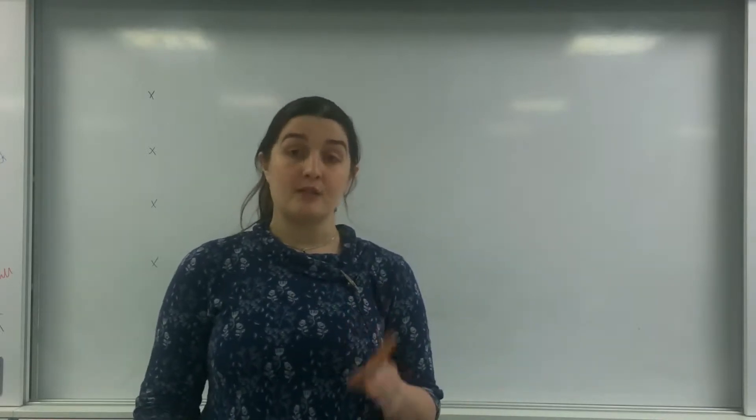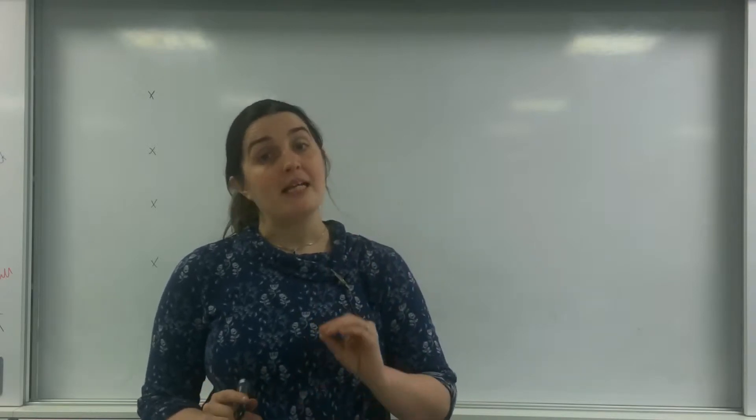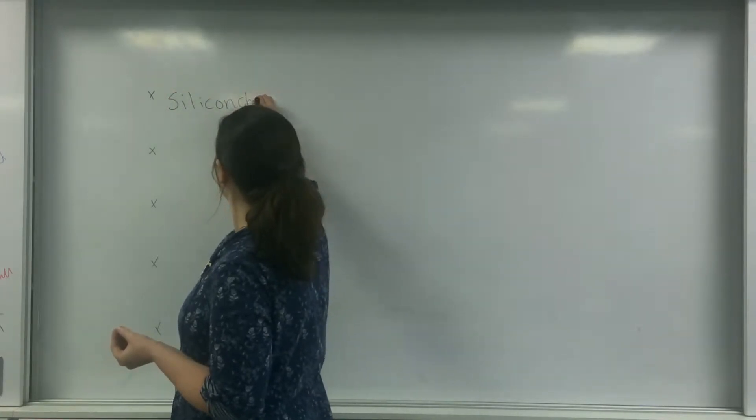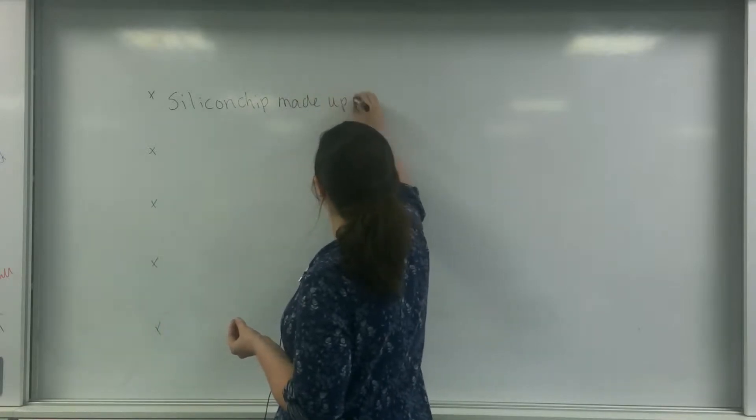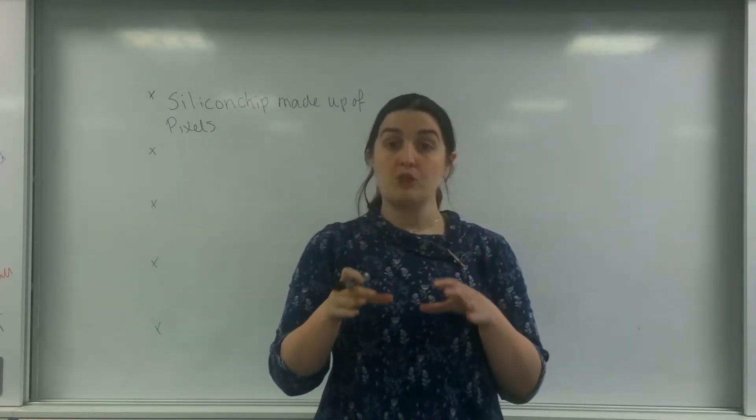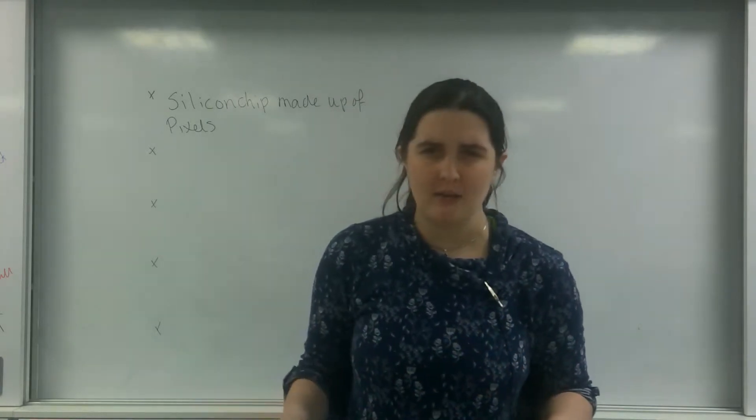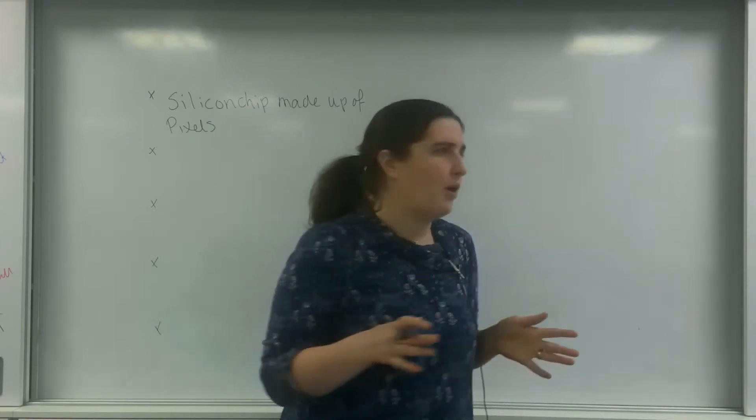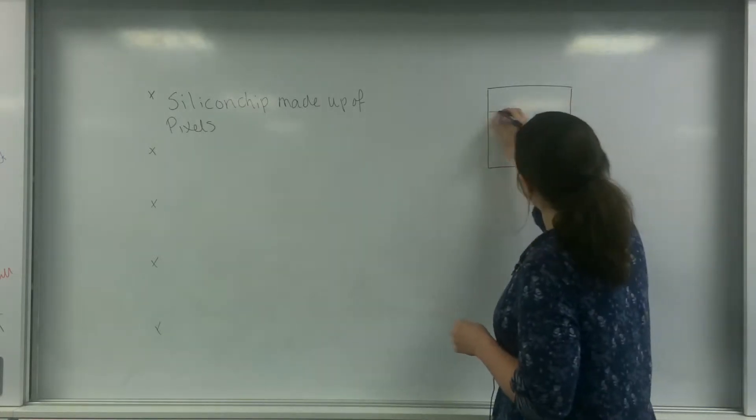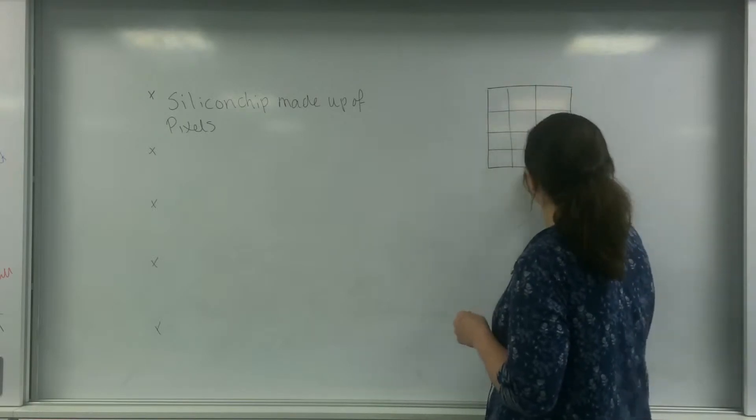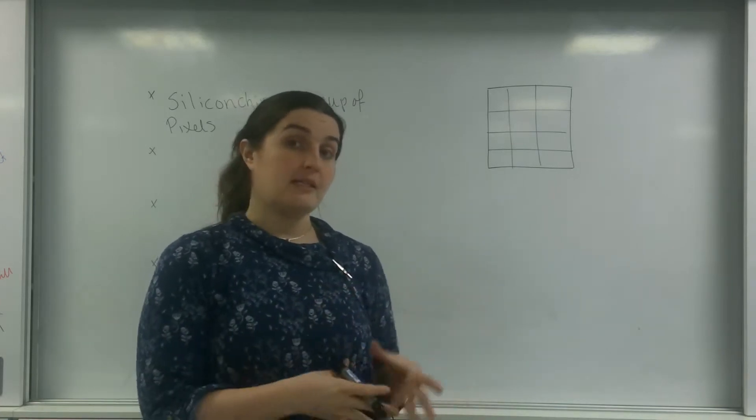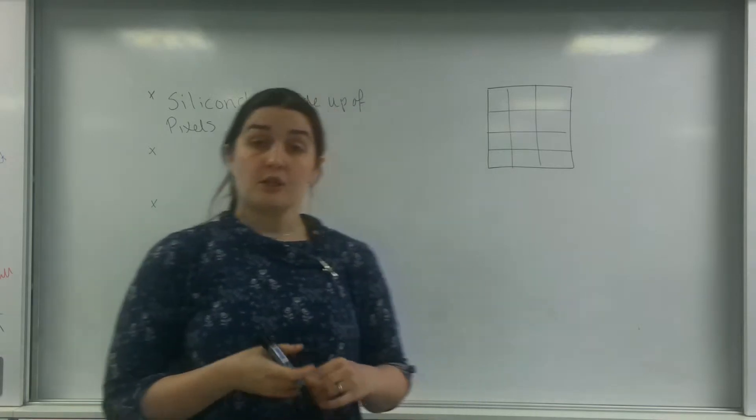So I'm going to run through the basic points of how a CCD works. A CCD, firstly, a charge coupled device, is a silicon chip that is made up of pixels. By this I mean it's a very small little chip and I'm going to enlarge this. Here's my silicon chip and it's made up of intersections called pixels. There'll be thousands and thousands upon this. So a silicon chip is made up of pixels.